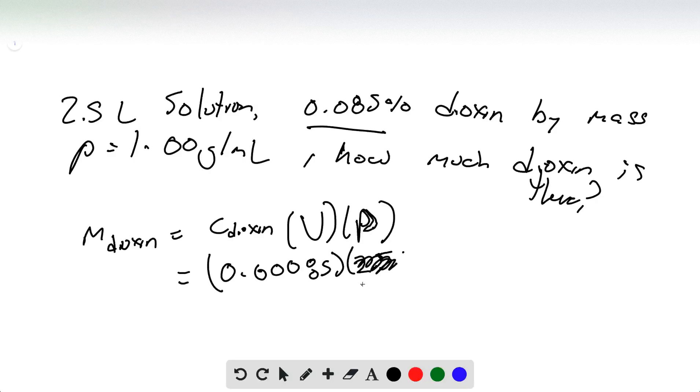Actually, let's just use the units of density, so 2,500 mL times 1.00 grams per mL, and we get 2.1 grams.